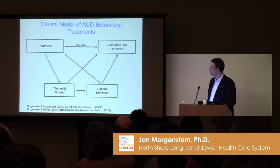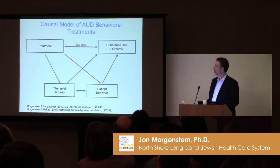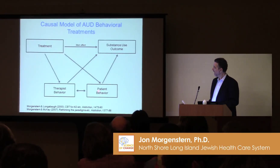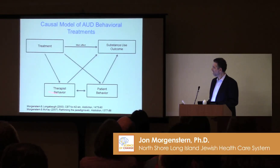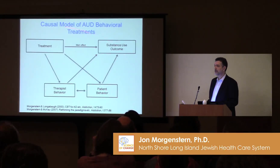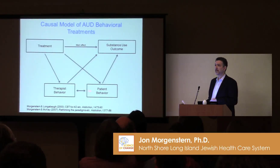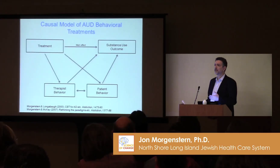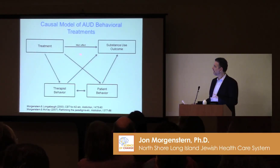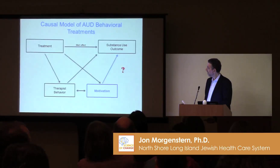This is a slide courtesy of Tim Apodaca and Dick Longabaugh which shows the problem space we have in mechanisms. We have a treatment that works and our hypothesis is that the treatment works because there are certain things the therapist is doing that influence patients' behavior, and that patient behavior is then impacting substance use outcomes. If we just take CBT, therapists are teaching coping skills, which should increase the patient's ability to cope, and greater ability to cope will result in reduced substance use outcomes. What's been surprising is it's been very difficult to connect all of these lines together, and as a result we haven't been able to demonstrate this nor extract knowledge from it to improve treatment.